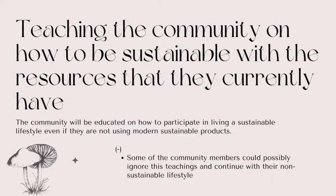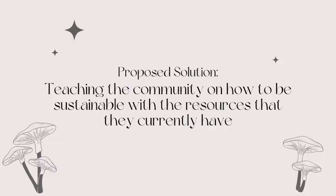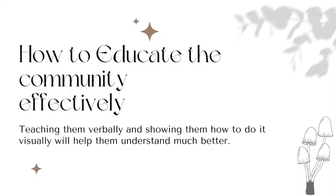The negative side of this solution is that some community members could possibly ignore the teaching and continue with their non-sustainable lifestyle. Based on all of this information, the proposed solution is teaching the community on how to be sustainable with the resources they currently have. In order to educate the community effectively, we need to teach them verbally and show them how to do it visually, which will help them understand much better because they can see it actually working, physically.